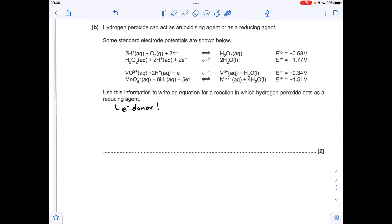So we've got two equations with hydrogen peroxide in. We want the top equation to run backwards because in that equation, hydrogen peroxide is donating electrons, therefore acting as a reducing agent. So in terms of which of these two equations we need, well,